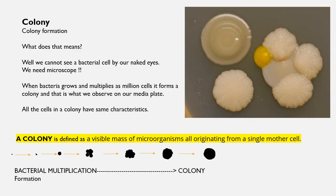Let's start. What is a colony or colony formation? We know that we cannot see bacterial cells with our naked eyes — we need a microscope. But when bacteria get nutrient supply, proper moisture, and other growth conditions provided in the lab on a media plate, they start growing and multiply into millions and millions of cells, and that forms a colony — which is what we observe on our media plate.